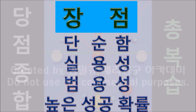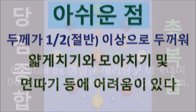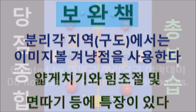본 이론의 장점은 가장 단순하고 실용성이 있다는 것입니다. 어떤 경우든 사용할 수 있는 범용성이 있으며, 최대의 장점은 성공 확률이 매우 높다는 것입니다. 아쉬운 점은 겨냥 두께가 1/1 즉 절반 이상으로 아주 두껍기 때문에 힘 조절을 위해 얇게 치거나 면따기 등이 어렵습니다. 보완책으로 분리각이 적용되는 지역에서는 이미지볼 겨냥법을 사용하는 것입니다.